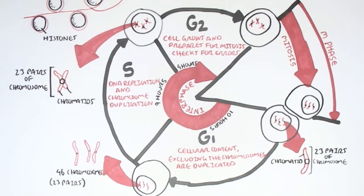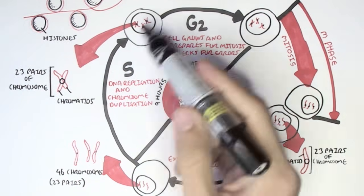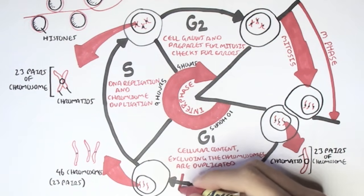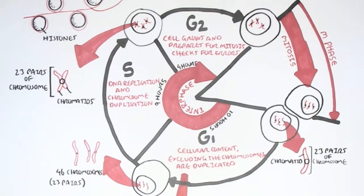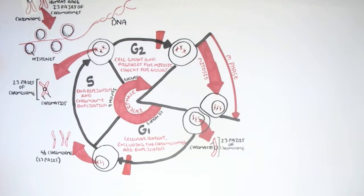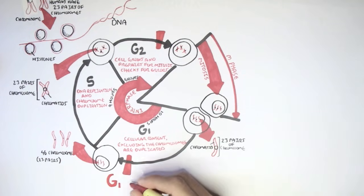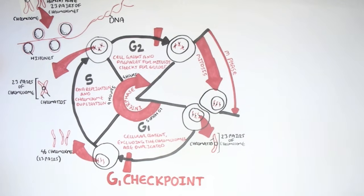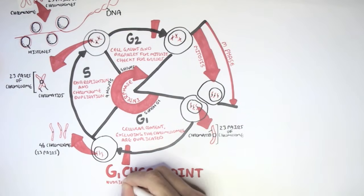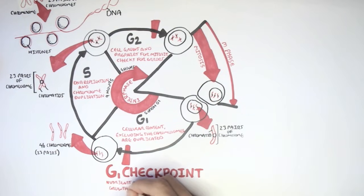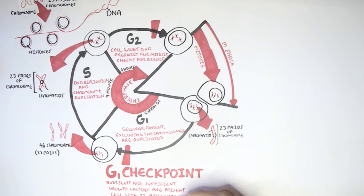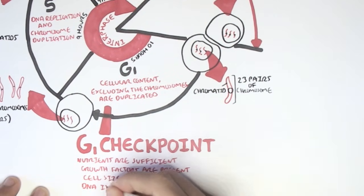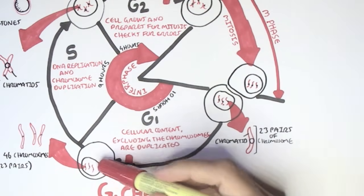During the interphase, before cell division, there are two checkpoint areas where the cell will check for errors in the DNA. These checkpoint areas occur before the end of G1 and before the end of G2. When this cell enters the first checkpoint, which is called the G1 checkpoint, the cell will check that nutrients are sufficient, that growth factors are present, that the cell size is adequate, and that there is no DNA damage. Once all this is okay, the cell can enter the synthesis phase, where it will have DNA replication.